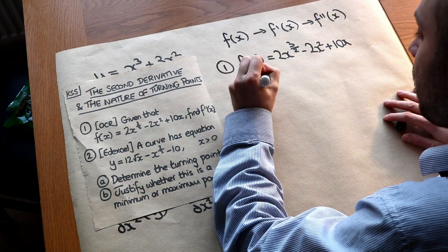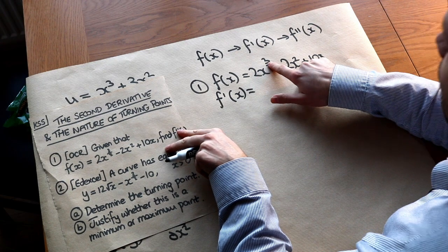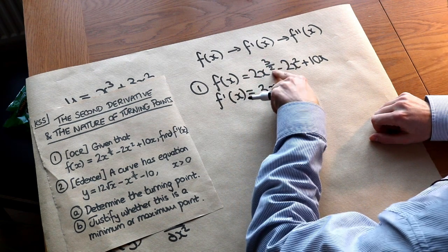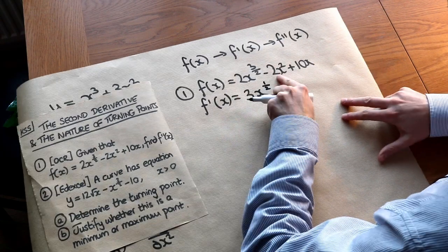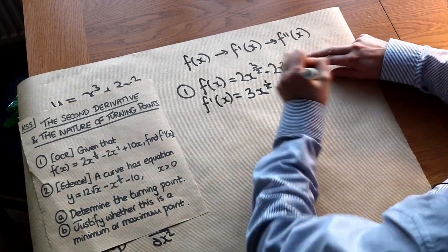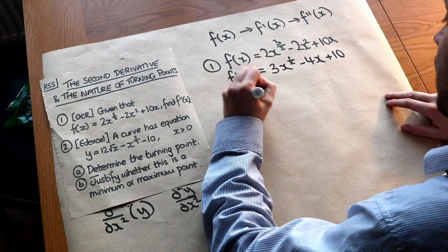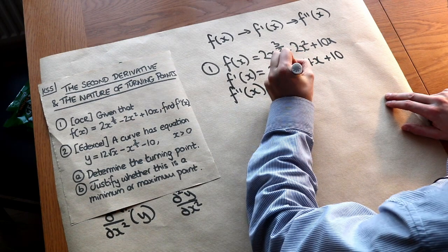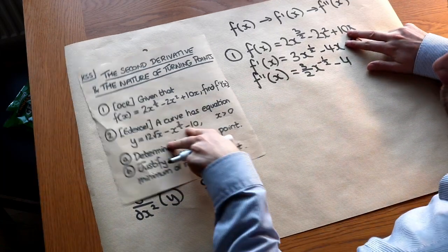Let's first differentiate once to find f'(x). We times the coefficient by the power: 2 times 3/2 is 3, and it's x to the power of 3/2 minus 1, which is 1/2. The minus 2 gets multiplied by 2, so it's minus 4x. And 10x, we just drop the x to get plus 10. Then we differentiate again: 3 times 1/2 is 3/2, giving 3/2 x to the minus 1/2, because 1/2 minus 1 is minus 1/2. That becomes minus 4, and the 10 is dropped. So f''(x) equals 3/2 x to the minus 1/2 minus 4.